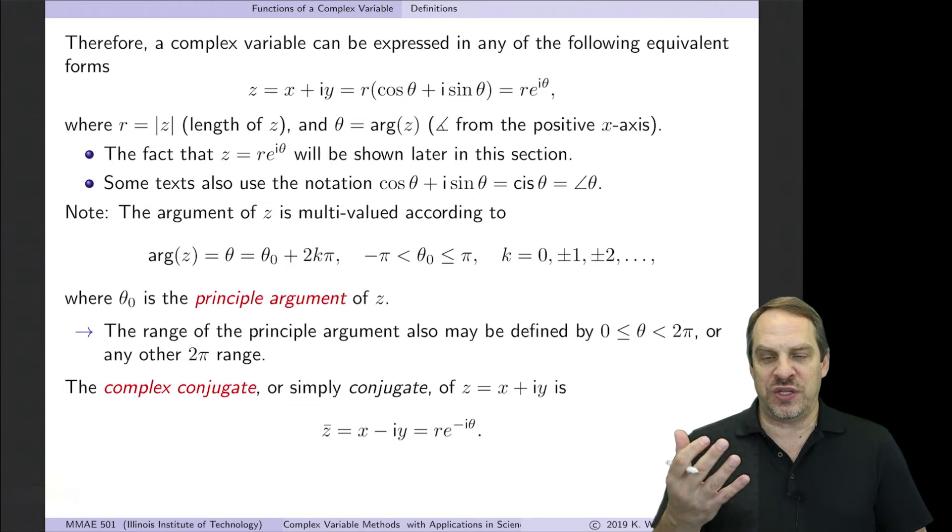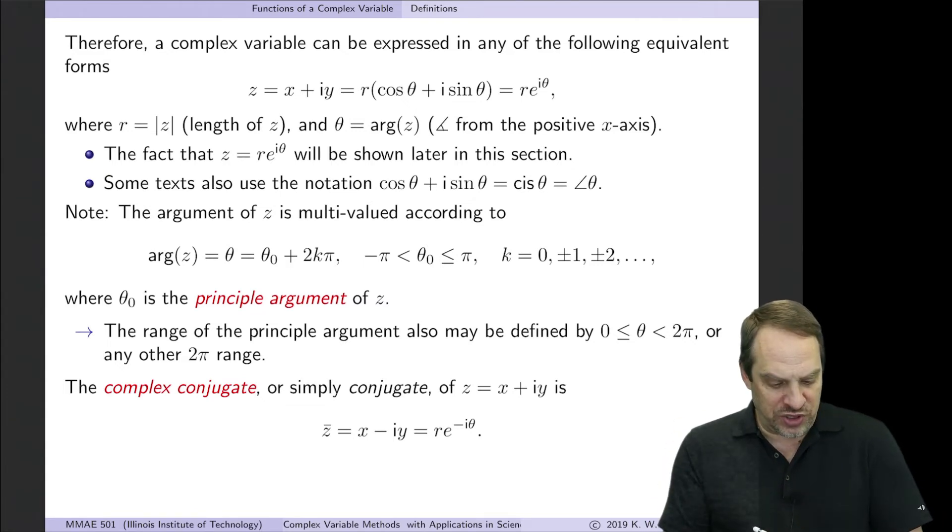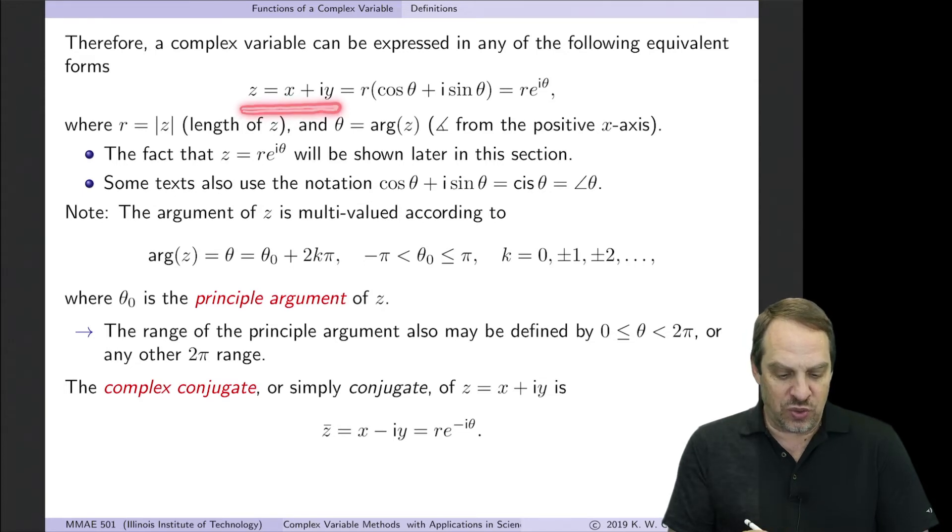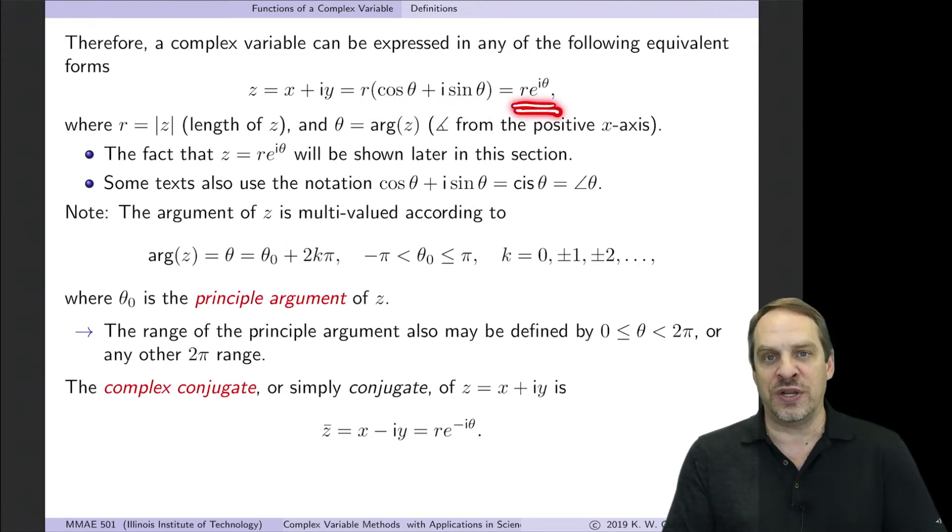So there's various ways we can represent a complex variable. We can use the Cartesian form, Z is X plus IY. Or we can use the polar form, R cosine theta plus I, R sine theta, using the transformation that we had in the previous slide. As I'll show in a little bit, this can also be written more compactly as R E to the I theta. We'll see that in a moment.